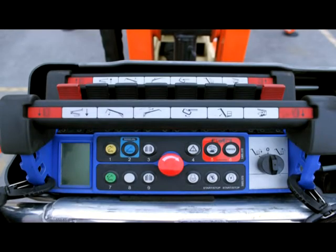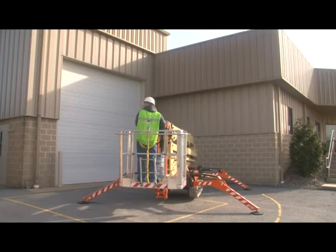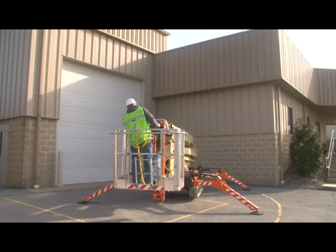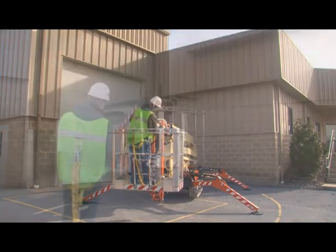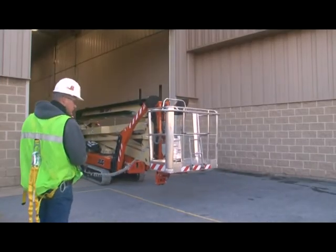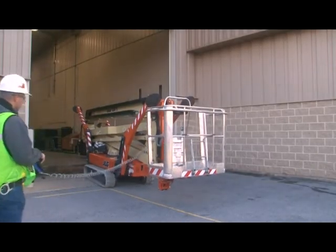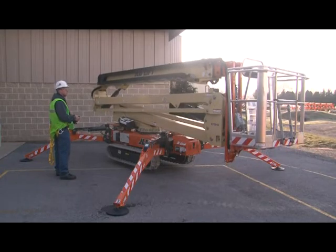Refer to the operation and safety manual for more information on the remote control station. The remote is operated in three positions: in a designated holder in the platform, out of the holder and connected to the platform cable, and out of the holder and connected to the ground cable.